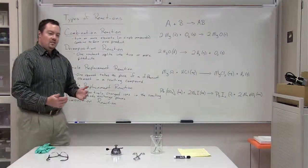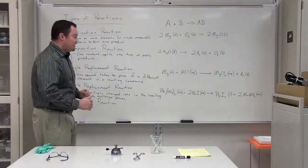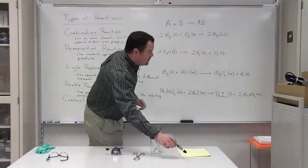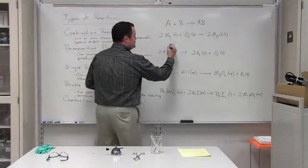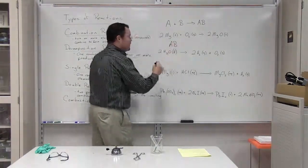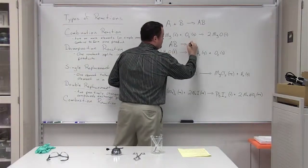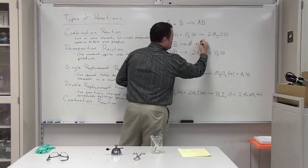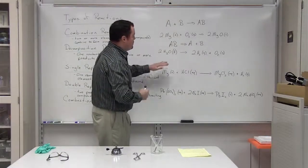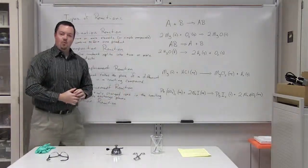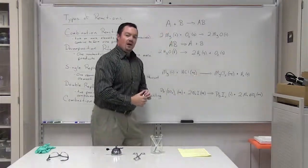The second type of reaction is a decomposition reaction. A decomposition reaction is simply the opposite of a combination reaction — this is where you have one reactant that splits into two or more products. The generic formula for a decomposition reaction is AB, your compound, reacting and separating into two or more products.